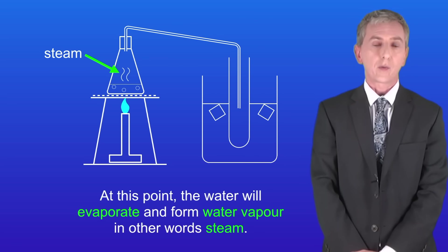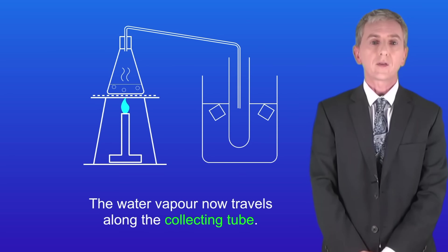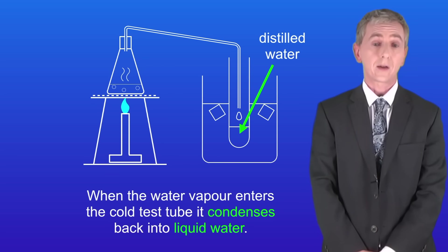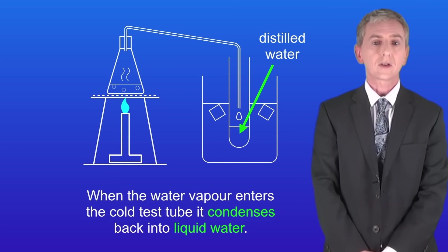At this point the water will evaporate and form water vapour, in other words steam. The water vapour now travels along the collecting tube. When the water vapour enters the cold test tube it condenses back into liquid water.